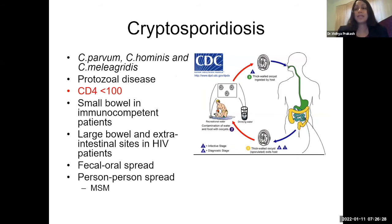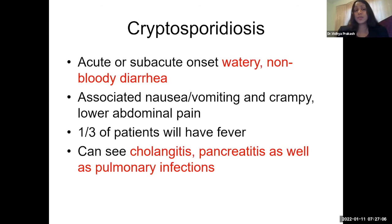Cryptosporidiosis — the most commonly seen form in clinical practice is Cryptosporidium parvum, a protozoal disease, generally seen in patients with CD4 counts less than 100. In immunocompetent patients, it's usually small bowel; in HIV patients, it also encompasses the large bowel and can cause extraintestinal infection. It's generally fecal-oral spread, though it can also be transmitted through sexual activity, especially among men who have sex with men. Patients typically present with acute or subacute watery, non-bloody diarrhea, crampy abdominal pain, associated nausea and vomiting, and about a third will have fever. Extension to the biliary tract, pancreas, and pulmonary infections can occur but are in the minority.